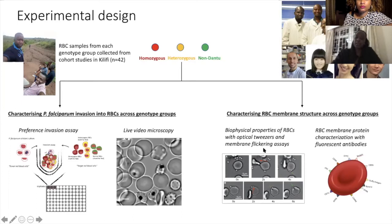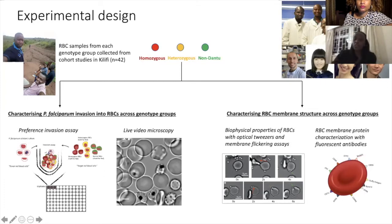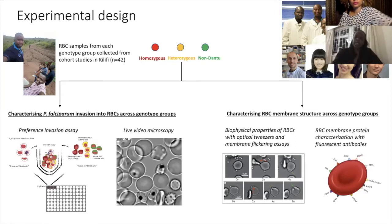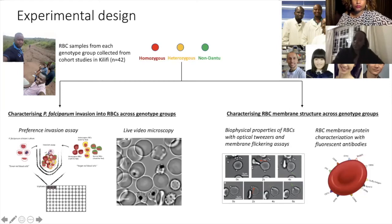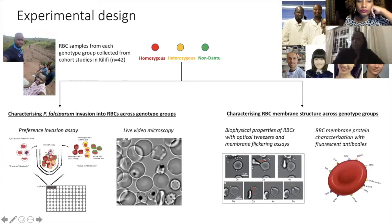In collaboration with a group at the University of Cambridge, Cavendish Biophysics Laboratory, who measured the mechanical properties of the red blood cell using live imaging and membrane flickering assays, this was a highly collaborative project involving our group at KEMRI as well as collaborators at the Sanger Institute and the University of Cambridge.